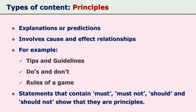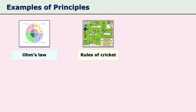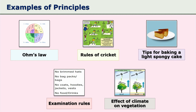Principles are explanations or predictions about why things happen in the world. They explain phenomena, serve as rules, guide actions, and involve cause-and-effect relationships used to interpret events. Examples include Newton's laws of motion, Ohm's law, Archimedes' principle, rules of tennis or cricket, tips for baking a spongy cake, rules of examination, and the effect of climate on vegetation.